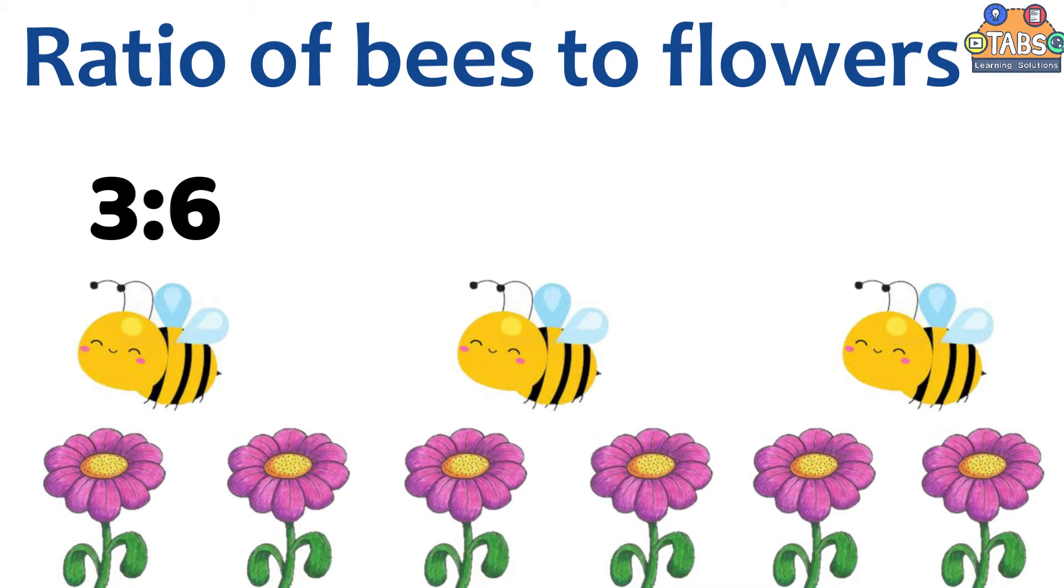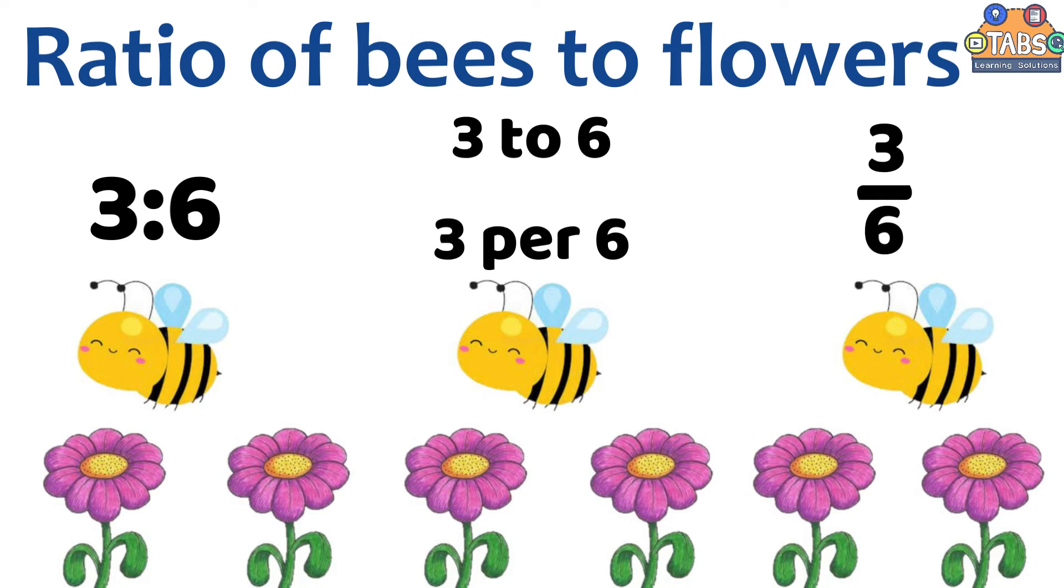We can also use 'is to' or 'per'. So, three is to six or three per six. And we can also use fraction to express ratio, like three over six.